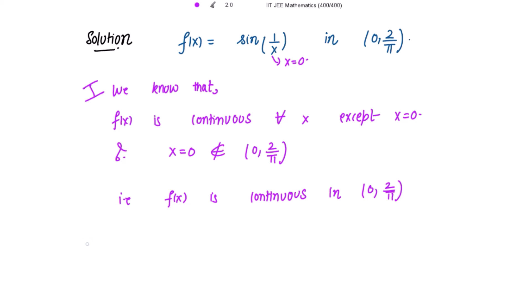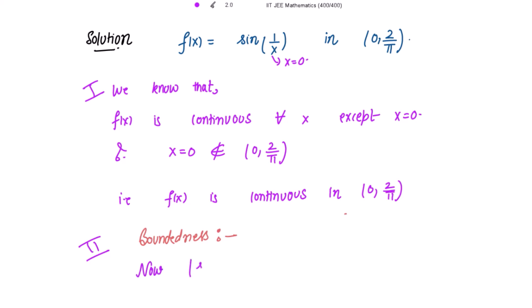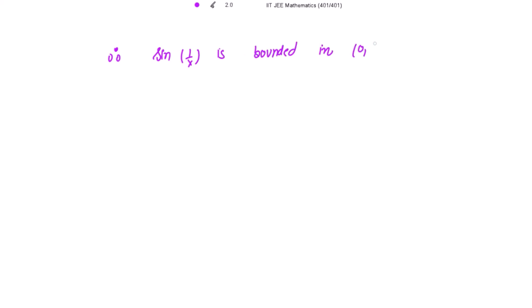Now let's check whether the function is bounded or not. We know that the range of sin(θ) is the closed interval [-1, 1], which means it is bounded. So |sin(θ)| ≤ 1 for all real x. Here θ = 1/x for our given function. Therefore, |sin(1/x)| ≤ 1, which means sin(1/x) is bounded, and therefore sin(1/x) is bounded in the open interval (0, 2/π).